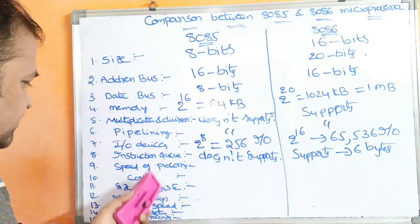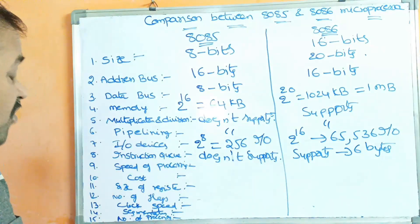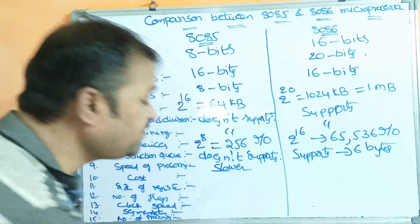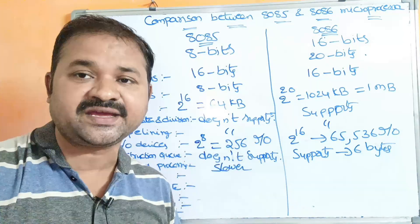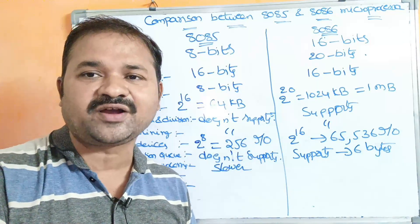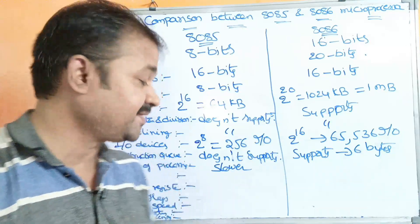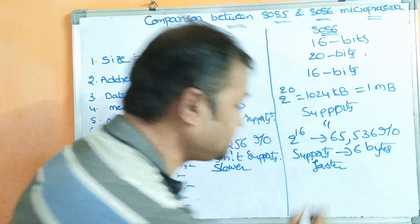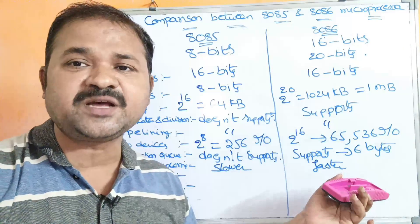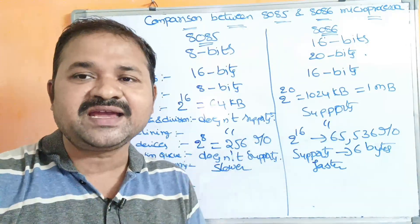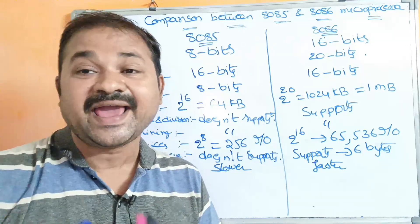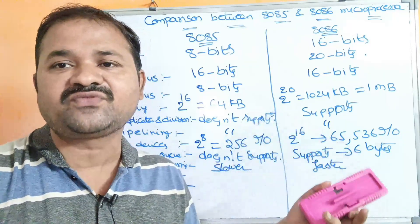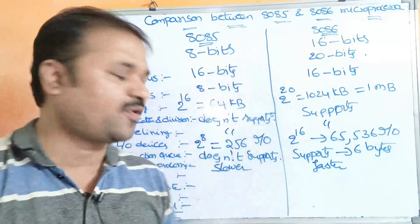The next characteristic is speed of processing. The 8085 has slower processing speed because it does not support pipelining, so all instructions are executed sequentially. Whereas the 8086 has very fast processing speed because it supports pipelining — fetching and execution happen simultaneously, allowing it to execute more instructions in less time.